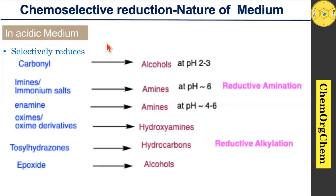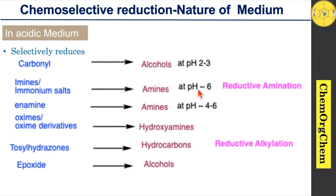Next, we move on to more chemoselective reductions based on the nature of the medium. In acidic medium, when you use sodium cyanoborohydride, carbonyl groups can be converted into alcohols — however, the pH level should be maintained at 2 to 3. Similarly, iminium salts can be converted into amines, but pH should be maintained at approximately 6. This particular process is called reductive amination. Just like imines, enamines can also be reduced to corresponding amines, with pH maintained at 4 to 6. Similarly, oximes and oxime derivatives can be converted into hydroxyamines.